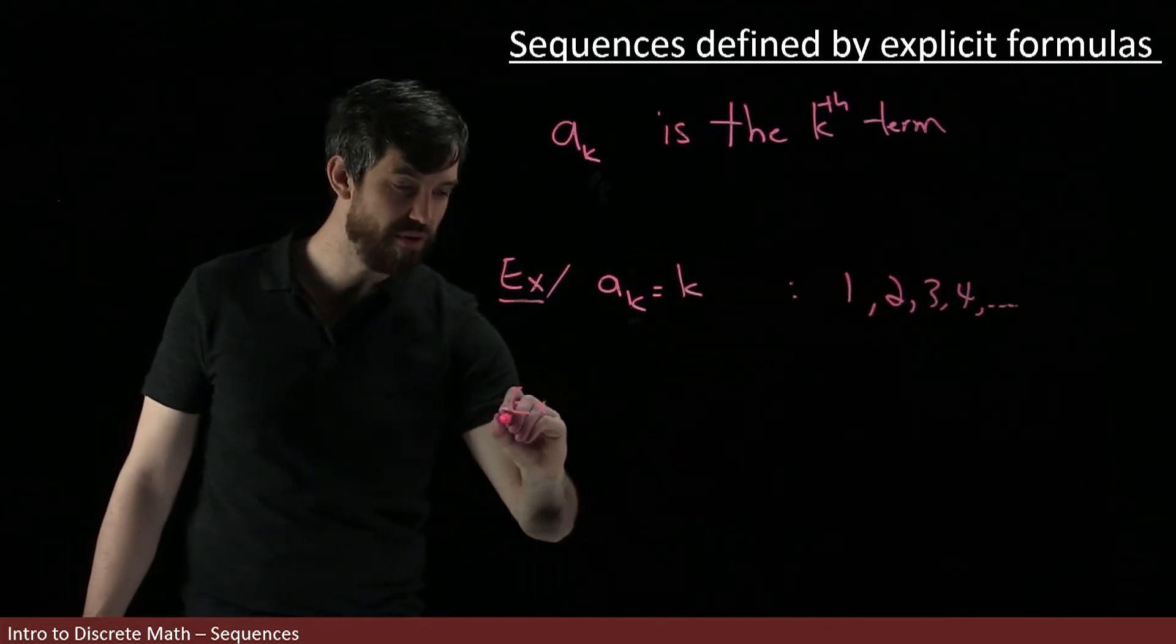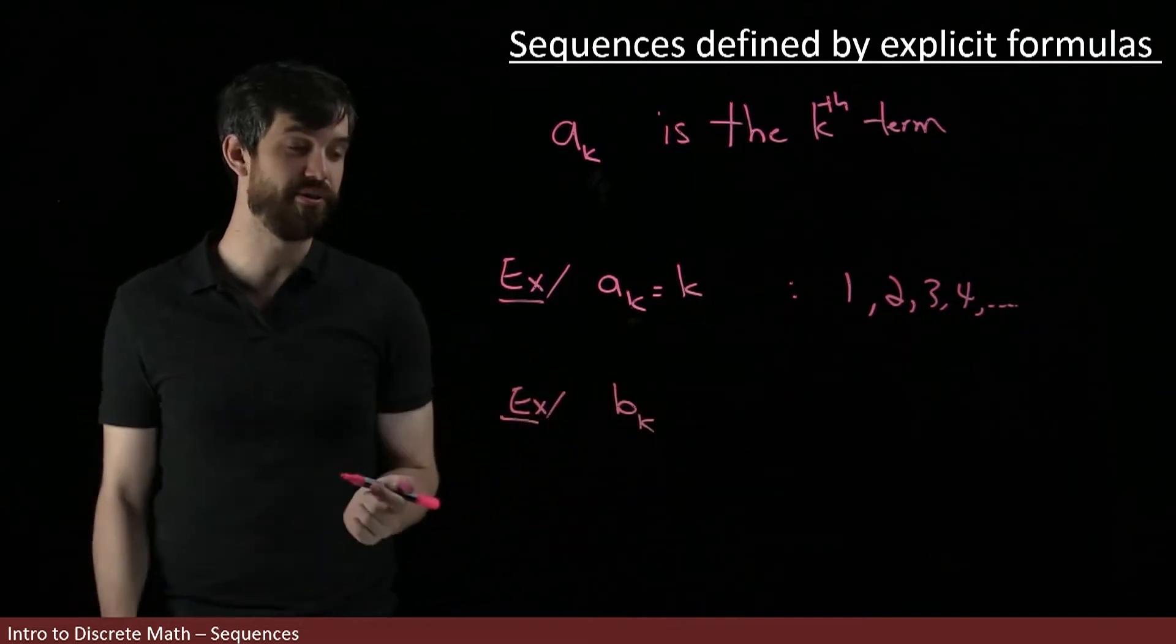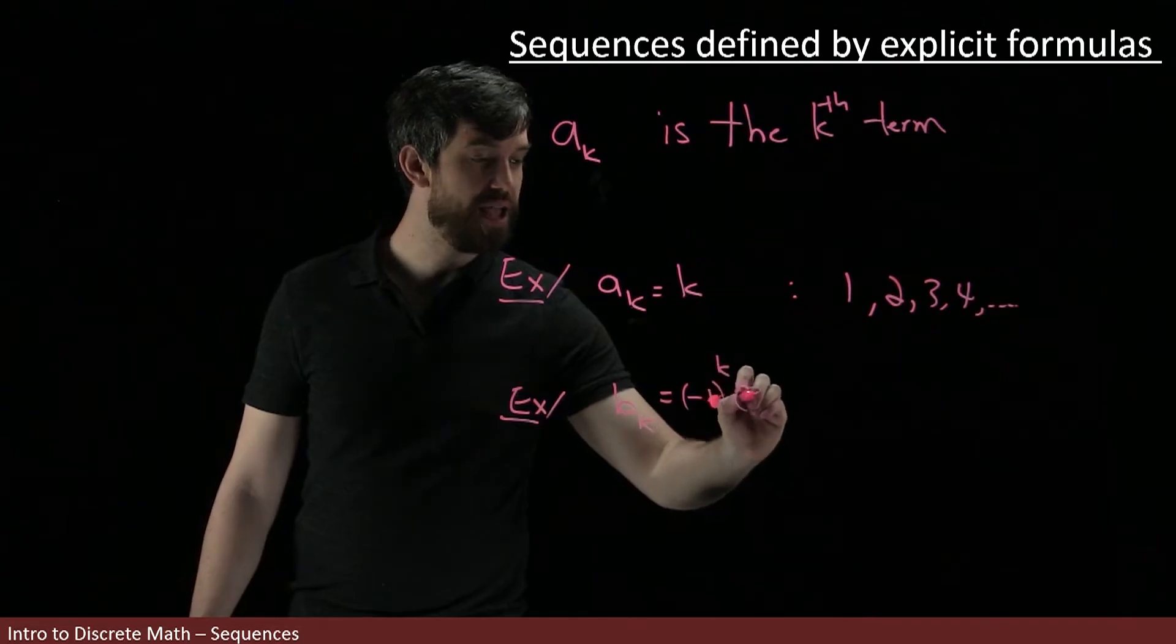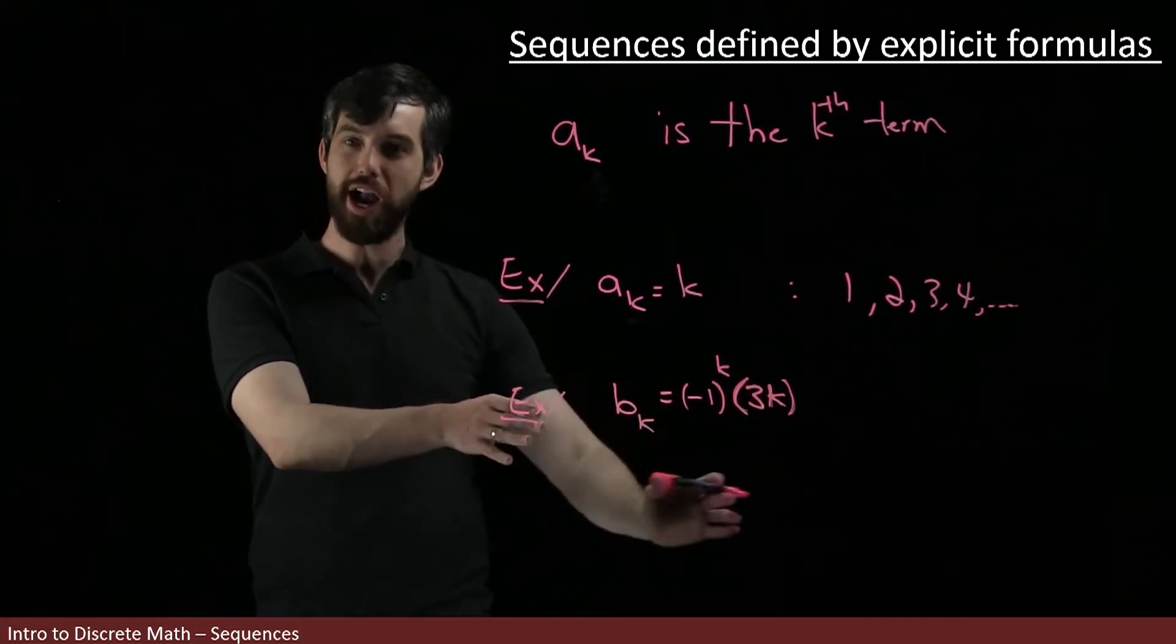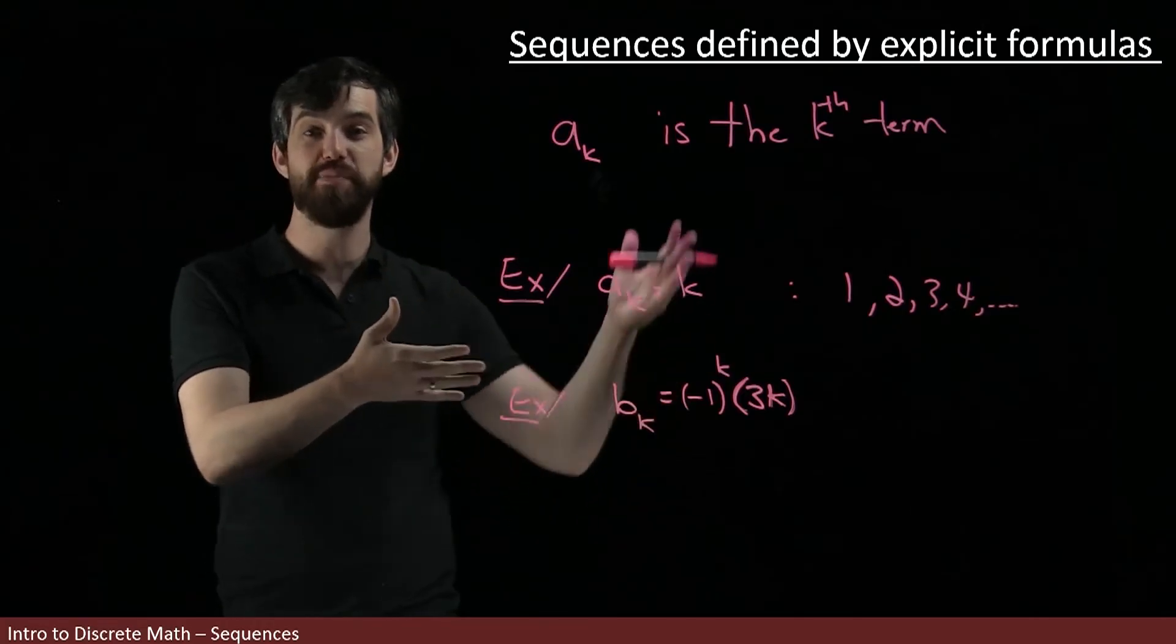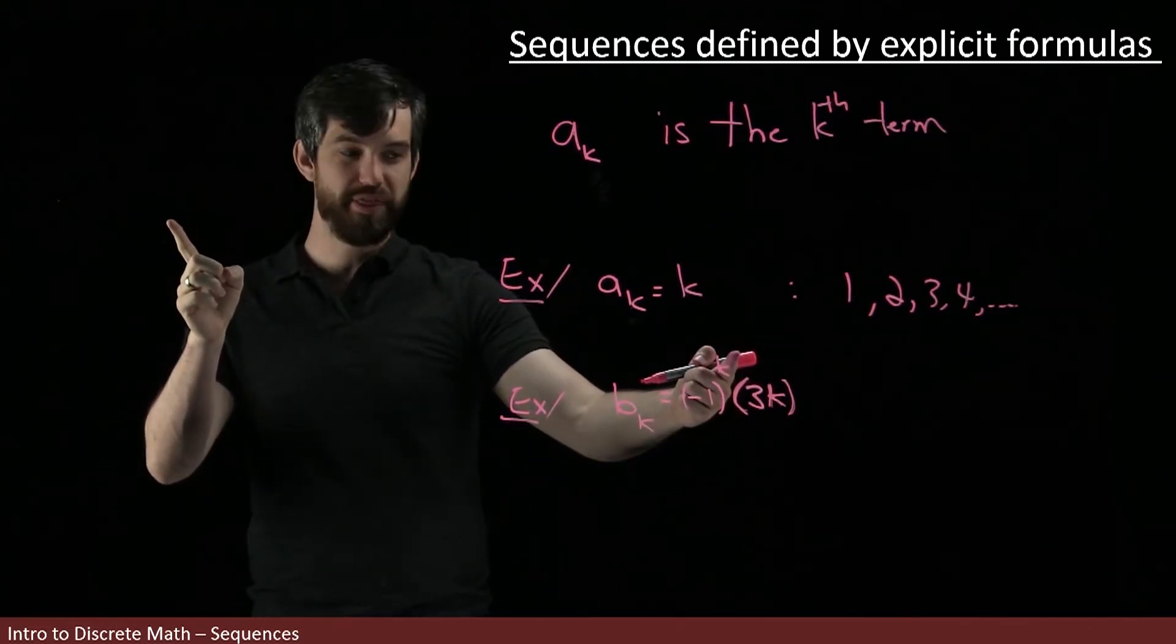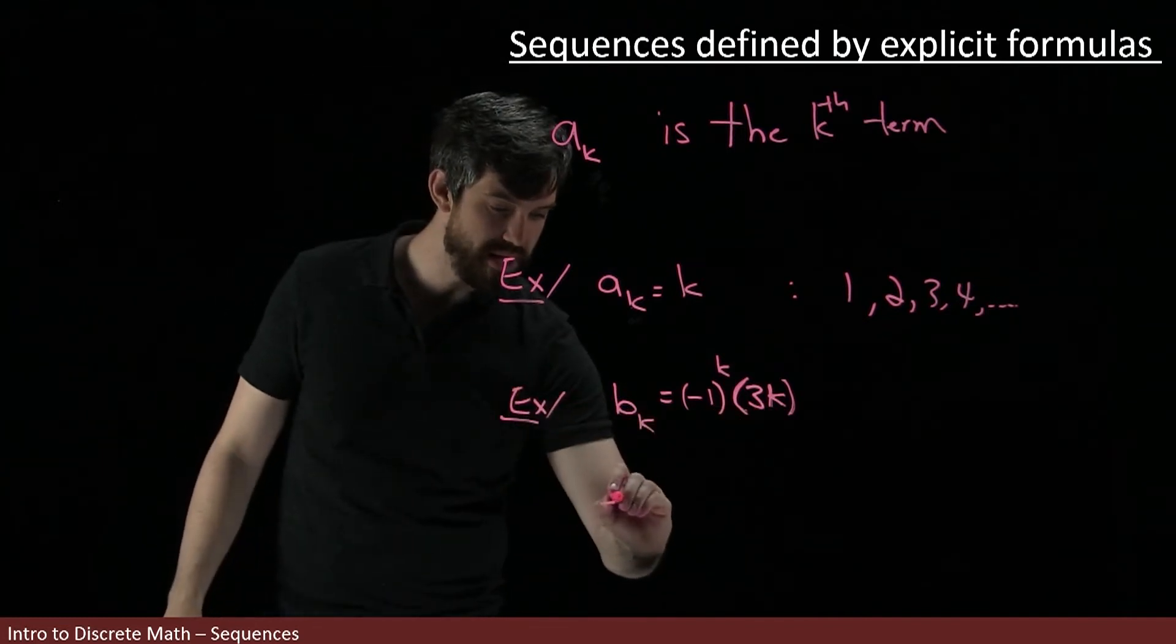But I can do much more interesting and convoluted ones here. So for example, how about this? I'll use b_k this time because I'm doing a new sequence. I'm going to say it is minus one to the power of k multiplied by three k. Okay, so let's try to write out the first few terms for this sequence which has been defined by an explicit formula. So the first one, if I look at the first term, is k equal to one. So minus one to the k, that's going to be just a minus one. And then three times one, so the first term is going to be minus three.